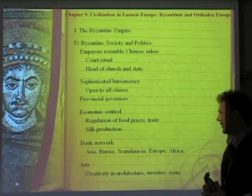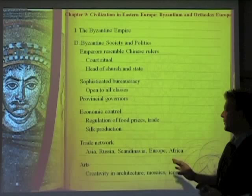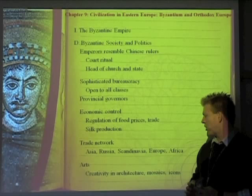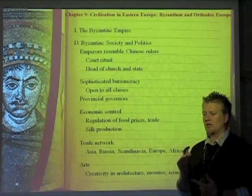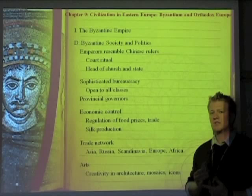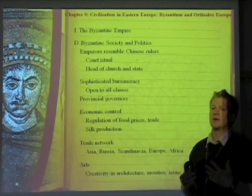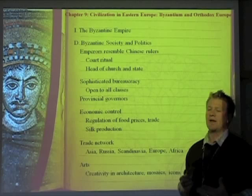The trade network has contacts with Asia, Russia, Scandinavia, Europe, and Africa — trade networks continuing to expand as more civilizations are reached. The arts, creativity, and architecture include mosaics and icons. Architectural styles continue with arches and large domes. Their unique art style appears in mosaics and especially icons — paintings of saints, angels, God, and Christ — often with a blue and gold background to represent the brilliance of heaven.